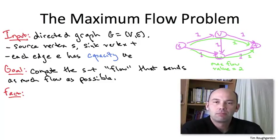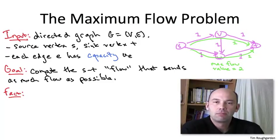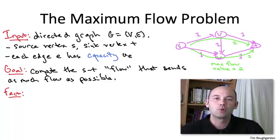So I'm happy to report that the maximum flow problem can be solved exactly in polynomial time. There are many ways of doing it, many different cool algorithms that solve the maximum flow problem, but the simplest ways are, in effect, greedy algorithms where you route flow one path at a time.